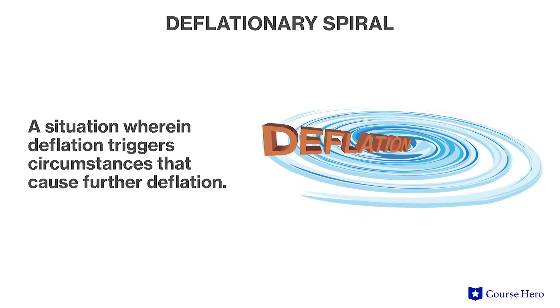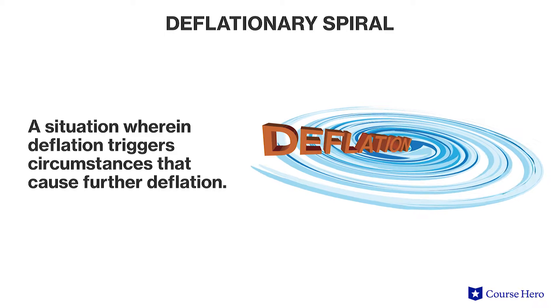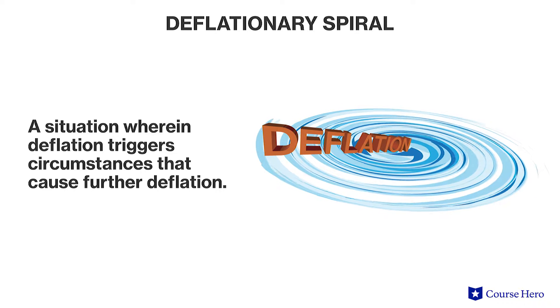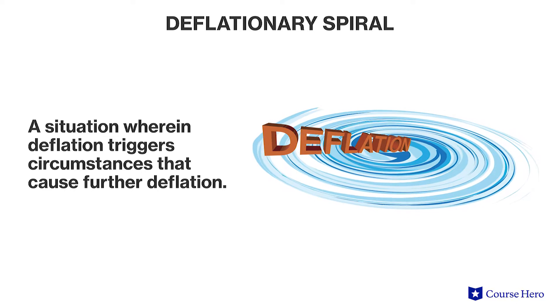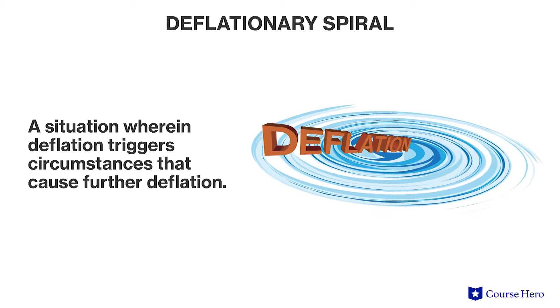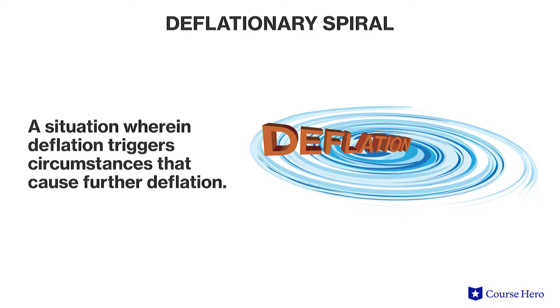In modern economics, deflation is generally viewed as an indicator of serious problems in an economy. Falling prices can cause a deflationary spiral, which is a situation wherein deflation triggers circumstances that cause further deflation and production to stall.